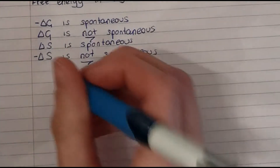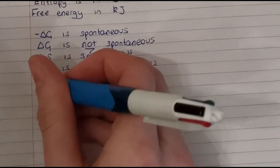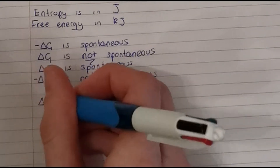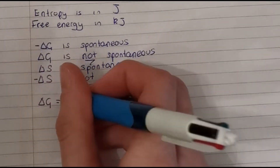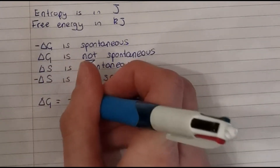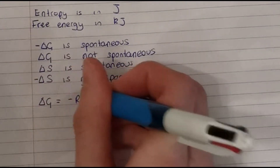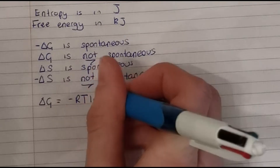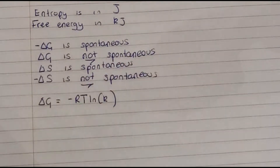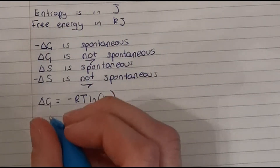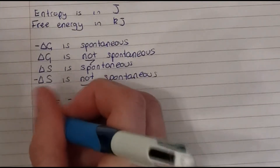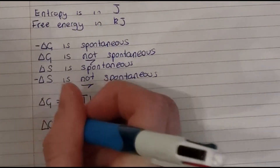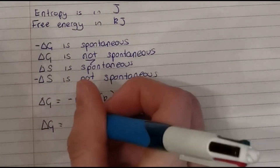Minus delta G is spontaneous, delta G is non-spontaneous, delta S is spontaneous, minus delta S is non-spontaneous.